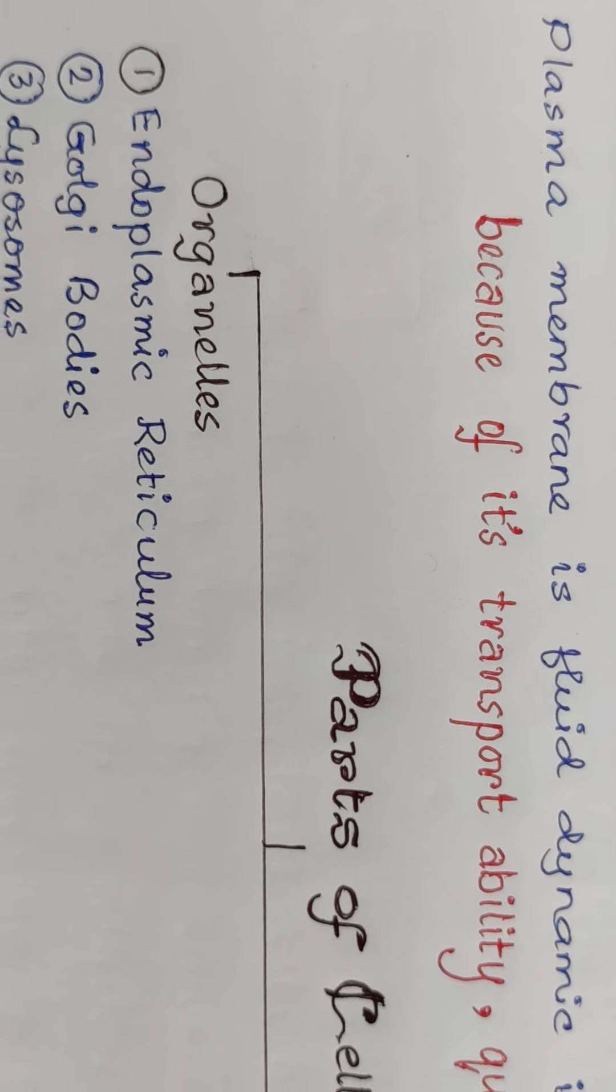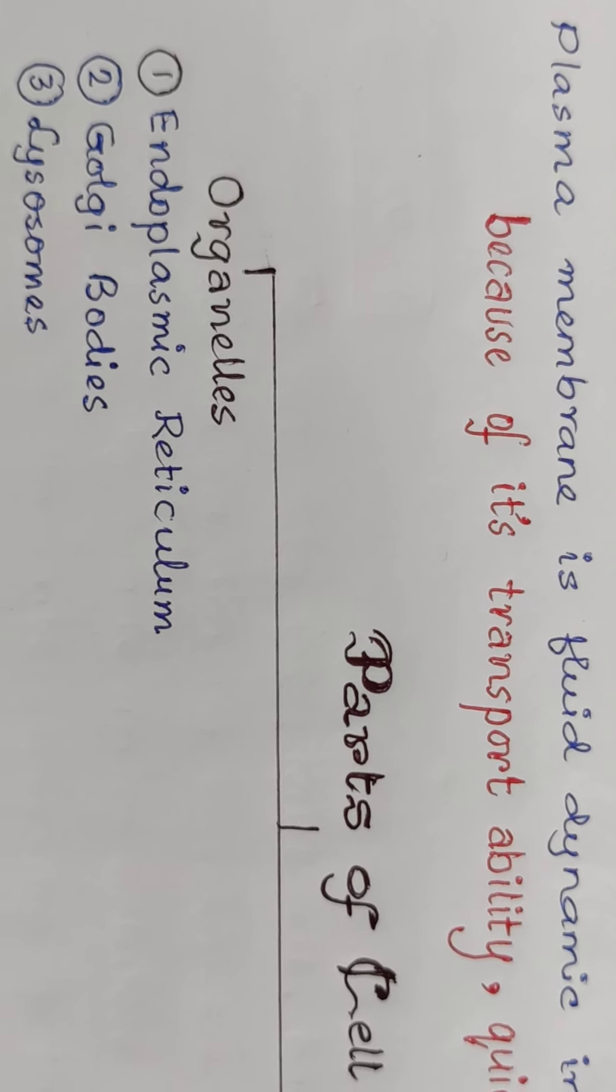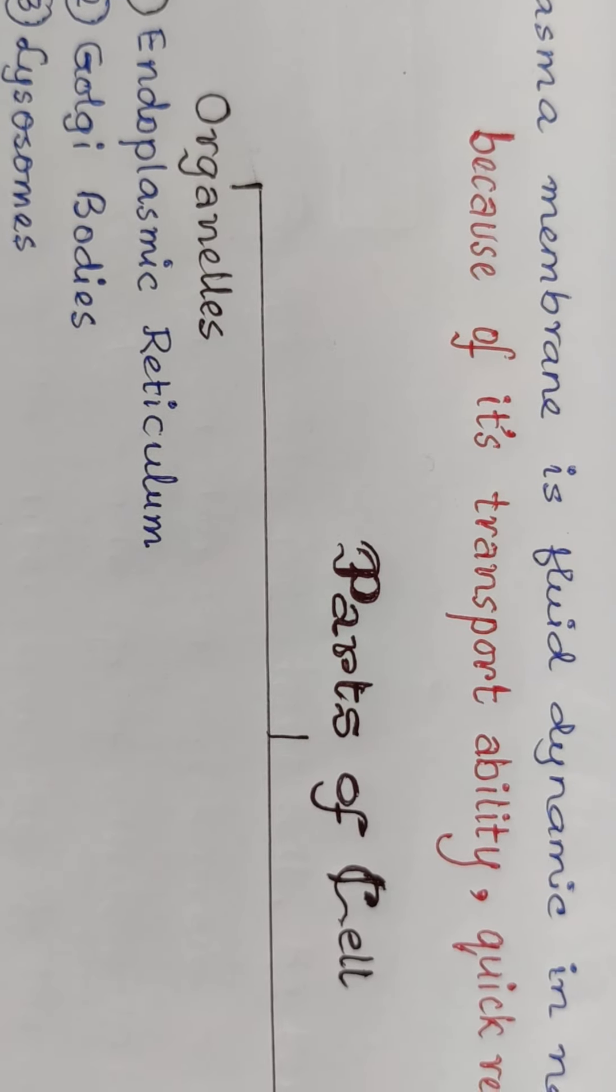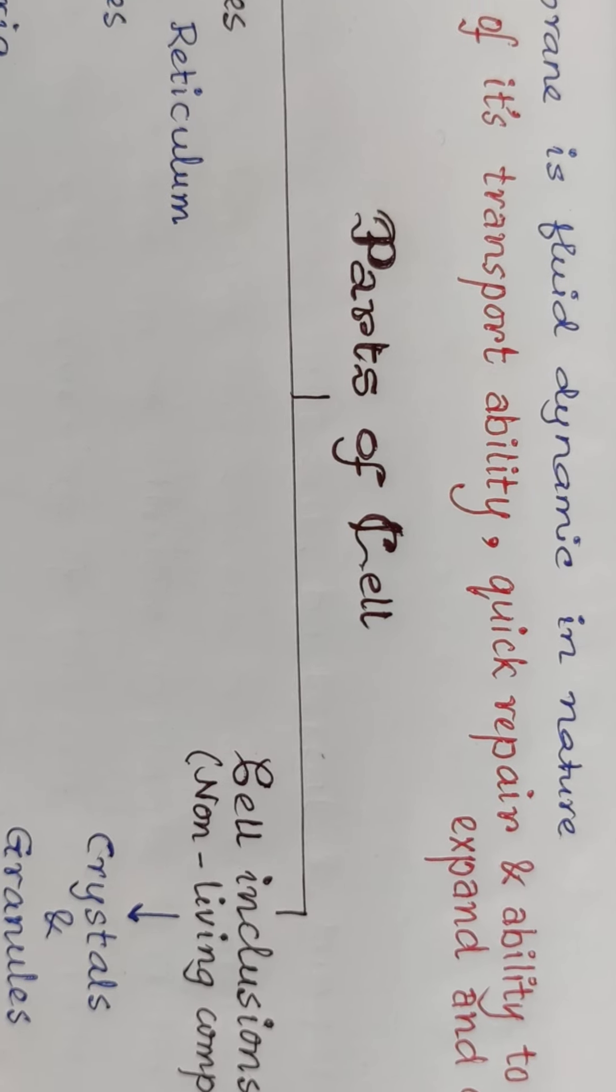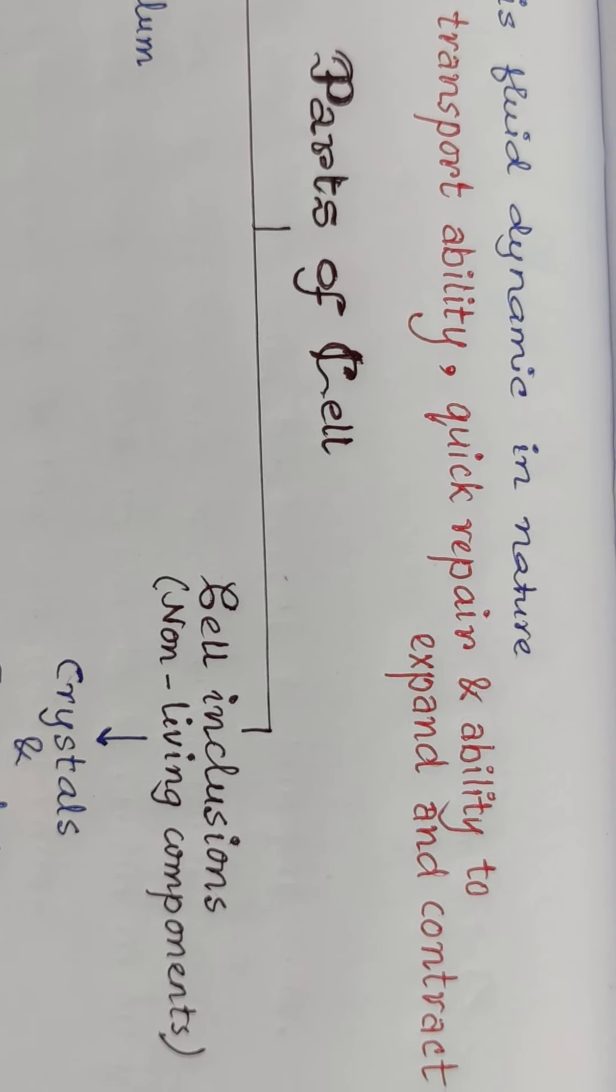Another vital characteristic of plasma membrane is it is fluid dynamic in nature. Why is it known as fluid dynamic? Because of its transportability, quick repairing ability, and the ability to expand and contract.